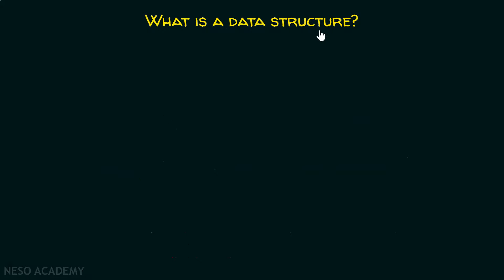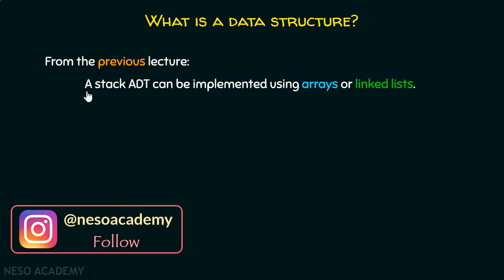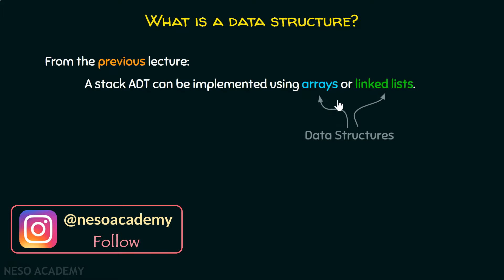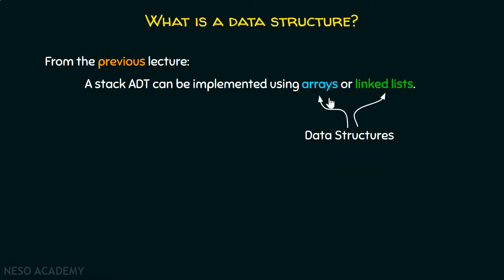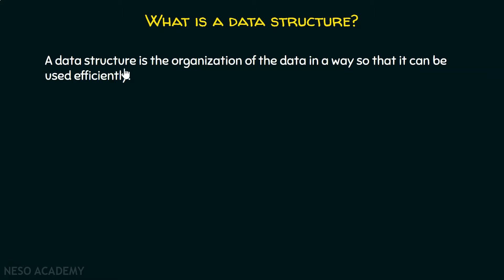What is a data structure? From the previous lecture, we get this information that a stack ADT can be implemented using arrays or linked lists. We can use these two data structures to implement a stack ADT. These are my data structures. Now, what information we get from this line? First of all, a data structure is the organization of the data in a way so that it can be used efficiently.